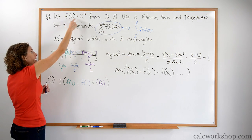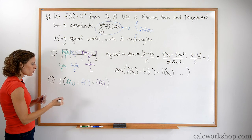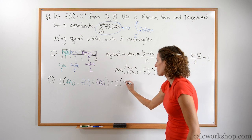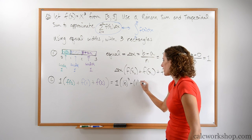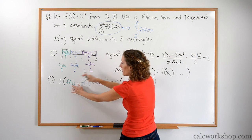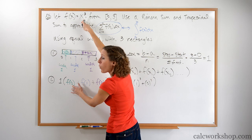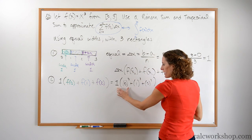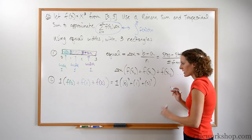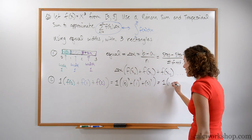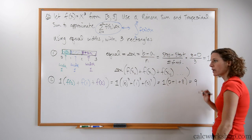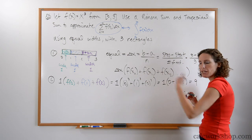We plug these x values into our function because f of x is x cubed. So what we're really doing is the width times height: 1 times (0 cubed plus 1 cubed plus 2 cubed). That gives us 1 times (0 plus 1 plus 8), which gives us a value of 9. That's the approximation for the left-hand Riemann sum.